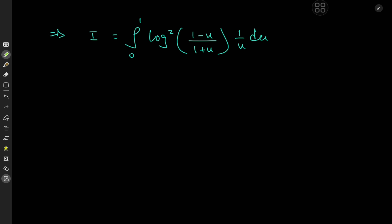For a really interesting substitution, we invoke the Weierstrass substitution in the form first used by Euler. We let (1 - u)/(1 + u) = z. The really cool thing about this substitution is that the function is self-inverse, meaning we can switch the roles of u and z: u = (1 - z)/(1 + z).